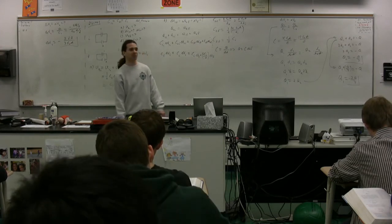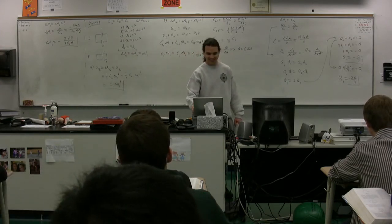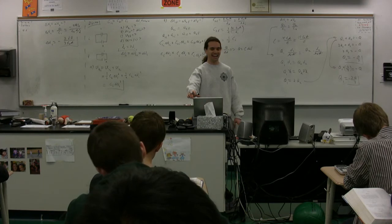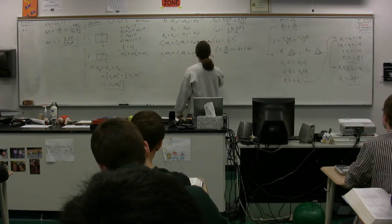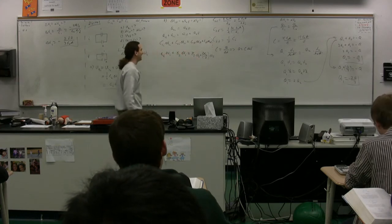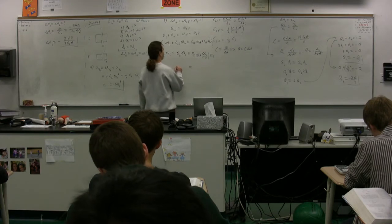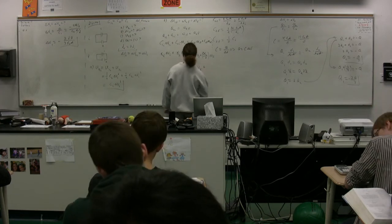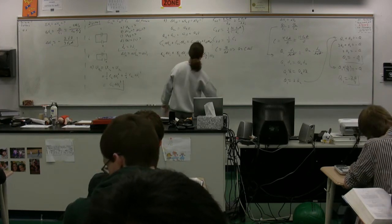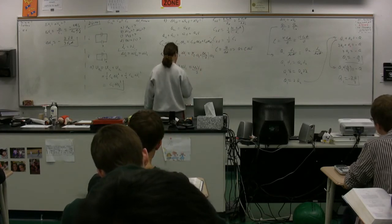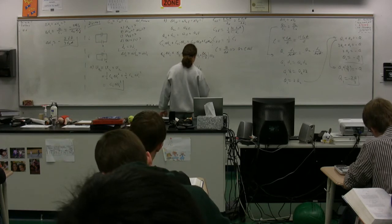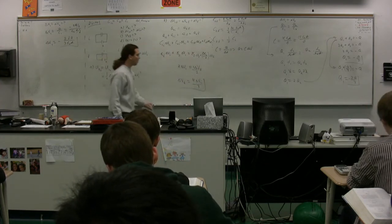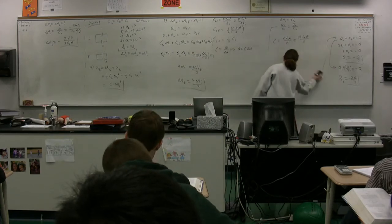After substituting and factoring out C_initial, the left side gives two times ΔV_initial, and the right side gives three-halves times ΔV_final. Solving, ΔV_final equals four-thirds of ΔV_initial. That is the answer to Part B — there is an increase in the electric potential difference.